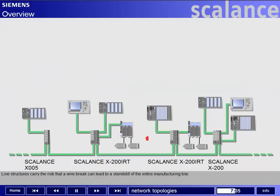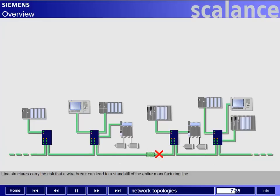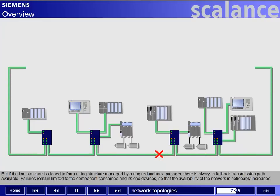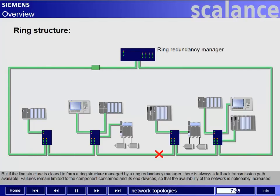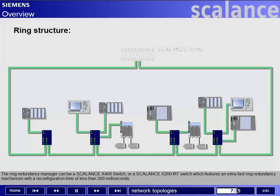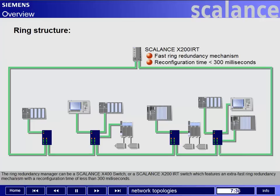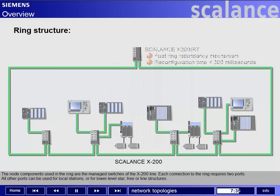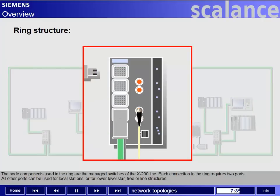Line structures carry the risk that a wire break can lead to a standstill of the entire manufacturing line. But if the line structure is closed to form a ring structure managed by a ring redundancy manager, there is always a fallback transmission path available. Failures remain limited to the component concerned and its end devices, so that the availability of the network is noticeably increased. The ring redundancy manager can be a Scalance X400 switch or a Scalance X200 IRT switch, which features an extra-fast ring redundancy mechanism with a reconfiguration time of less than 300 milliseconds. The node components used in the ring are the managed switches of the X200 line. Each connection to the ring requires two ports; all other ports can be used for local stations or for lower-level star, tree, or line structures.